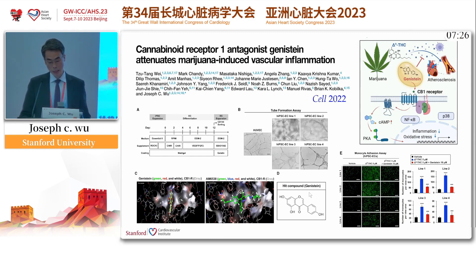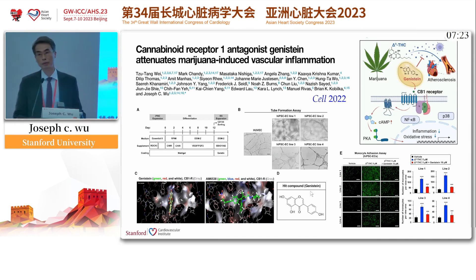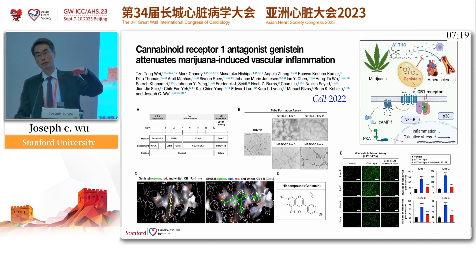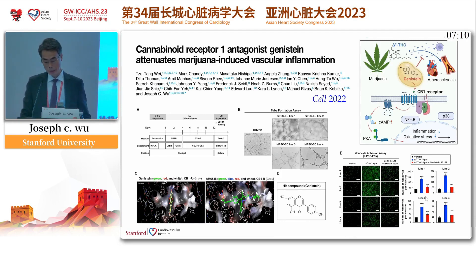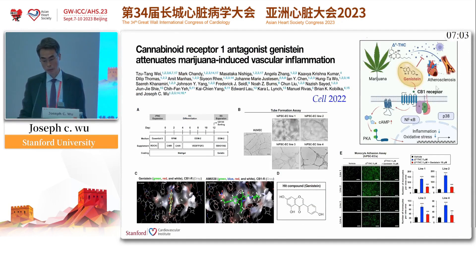Genistein is an isoflavone found in soybean derivatives. It's a neutral CB1 antagonist — essentially, it binds to the receptor but doesn't activate the pathway, preventing THC from binding to the receptor. And here, we could show that by adding genistein, it can cut down the inflammation. By adding genistein in two different mouse models of atherosclerosis, it can also cut down the inflammation as well.